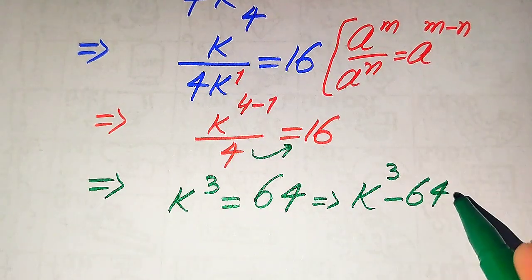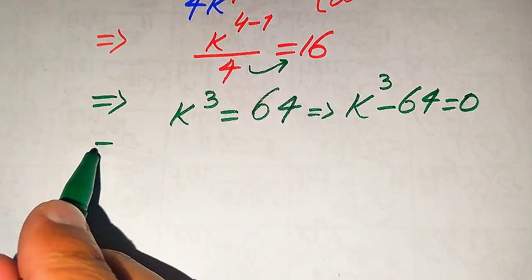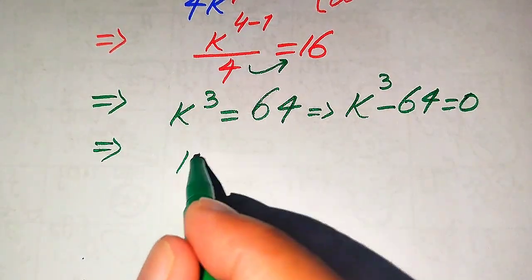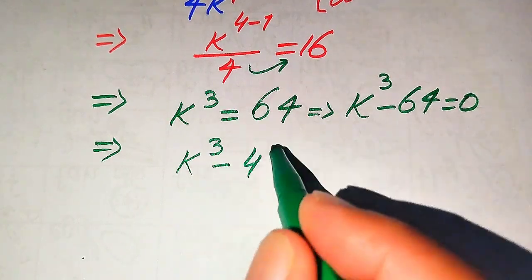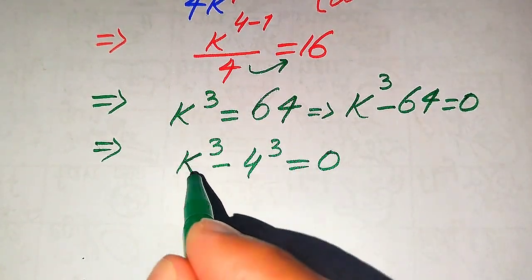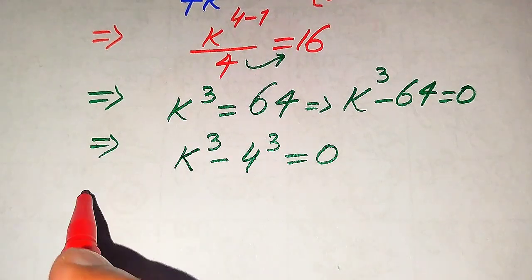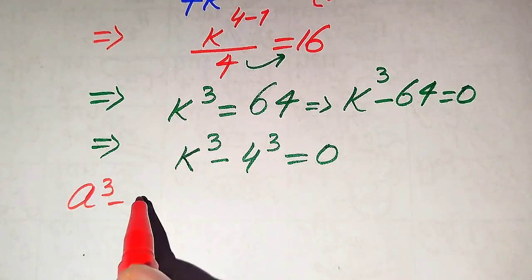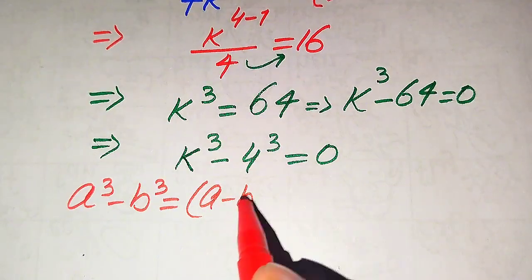Moving 64 to the left-hand side gives us k cubed minus 64 equals 0. We write both terms in cubic form: k cubed minus 4 cubed equals 0. This is a cubic equation in k, so we use the difference of cubes formula.